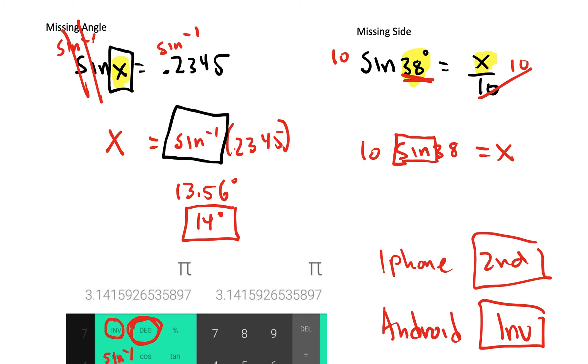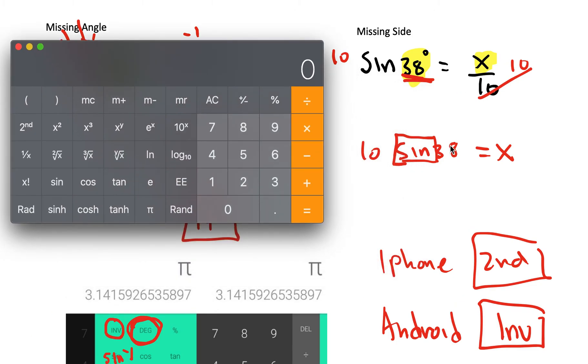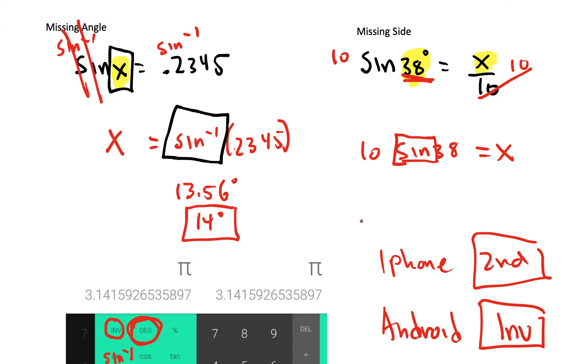So let's do this missing side example. This one says sine of 38. x is already alone. So I'm just going to put 38 and make it sine. 0.6156. So it's 10 times 0.6156. And x becomes 6.5 if we round it.